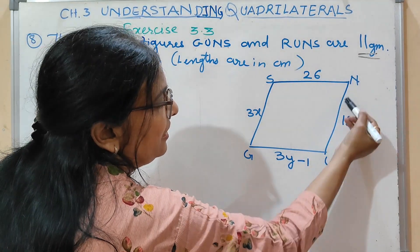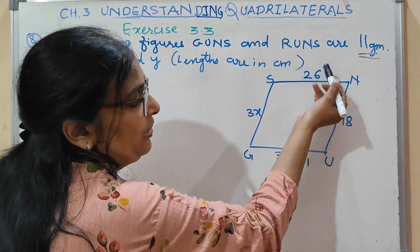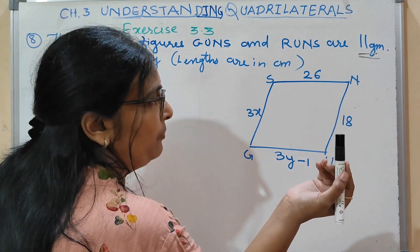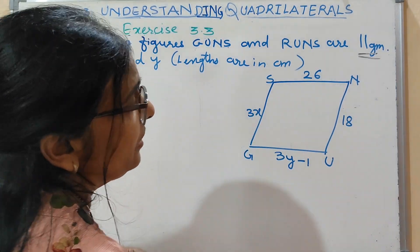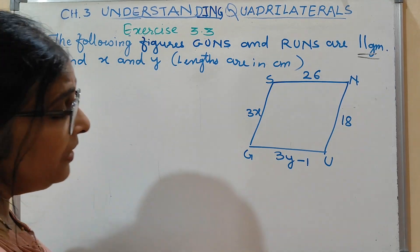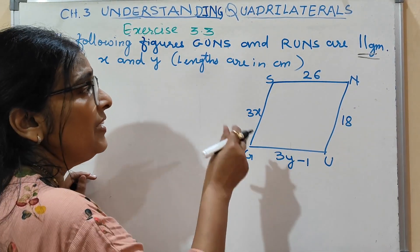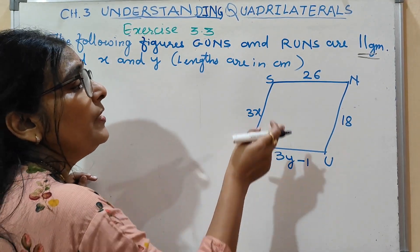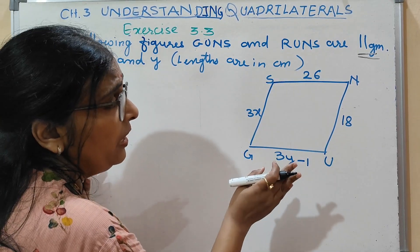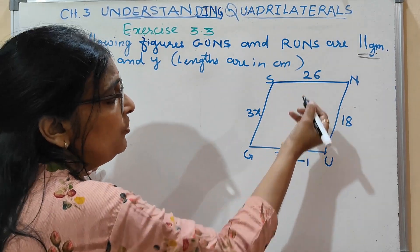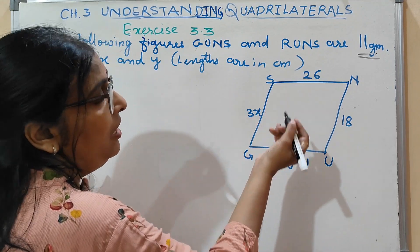The side lengths are in centimeters — that means 26 centimeters and 18 centimeters. Now we need to find X and Y of this parallelogram. The side-related property is: opposite sides of a parallelogram are equal.